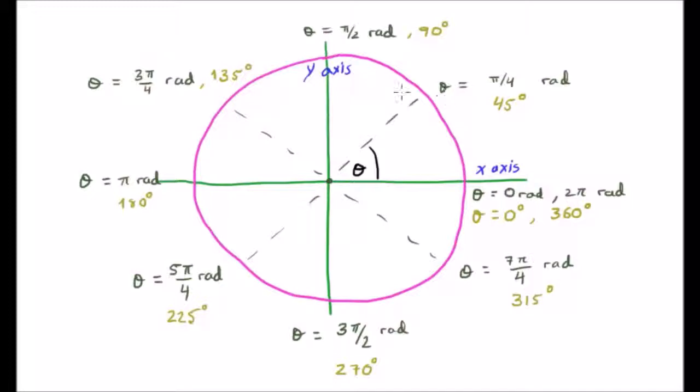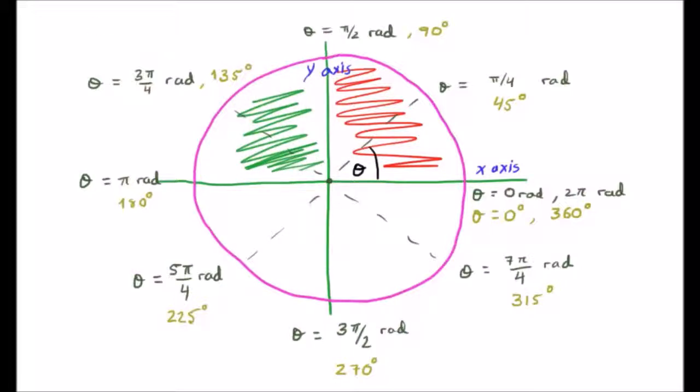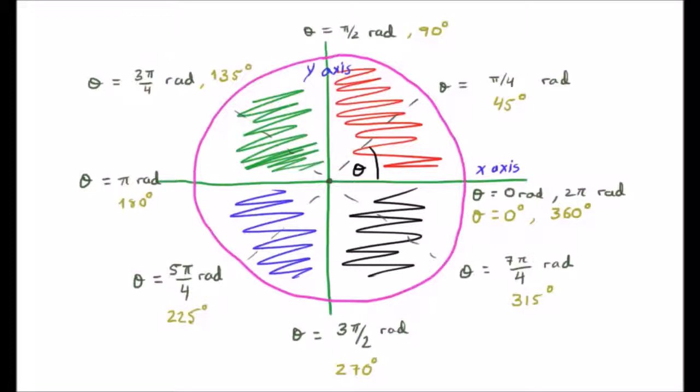It is very useful to split the circle up into quadrants. There are four quadrants in the circle. So the first quadrant will be in red. The second quadrant is in green. The third quadrant is in blue. And the fourth quadrant is in black.